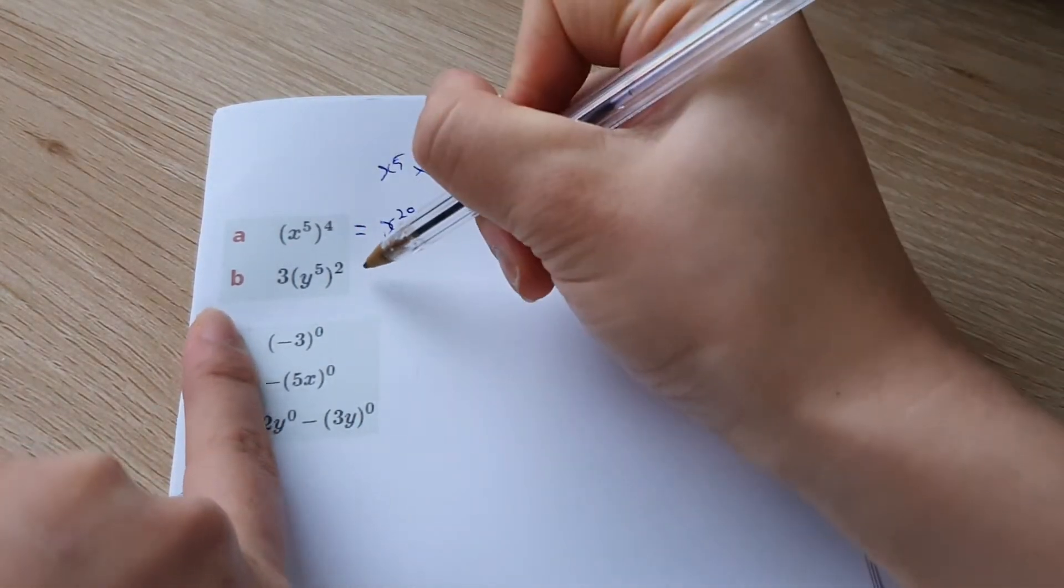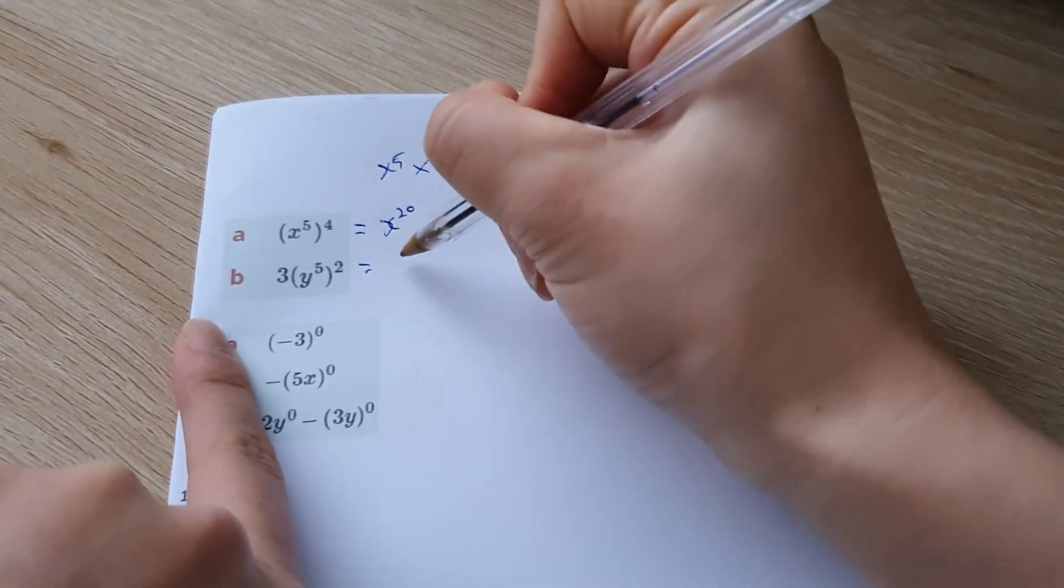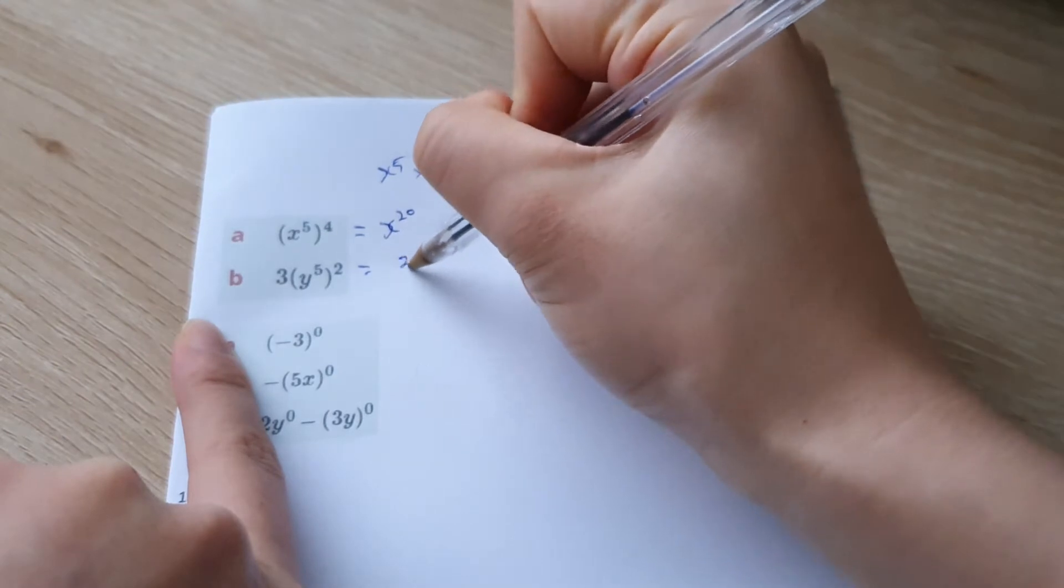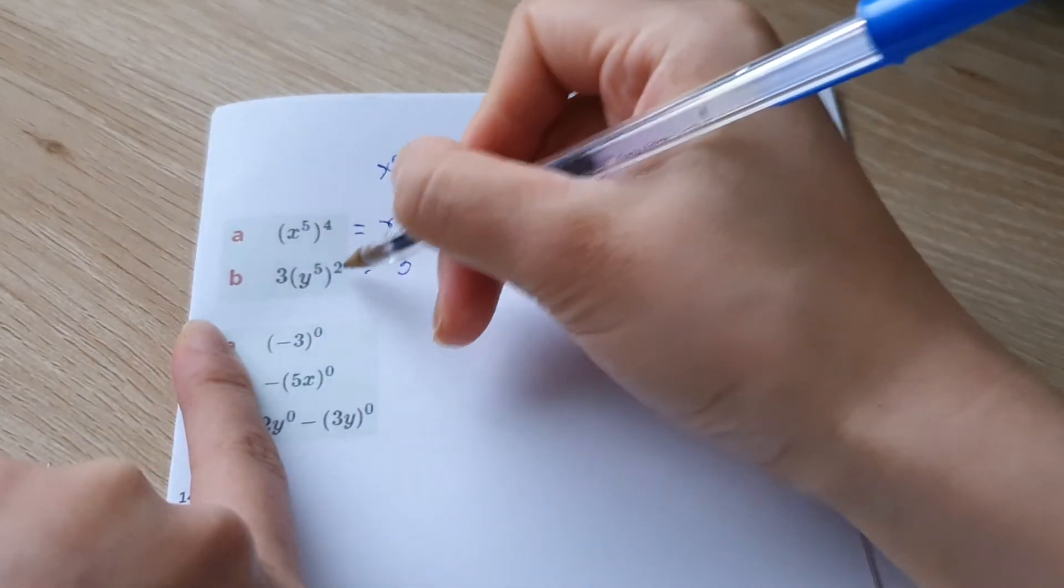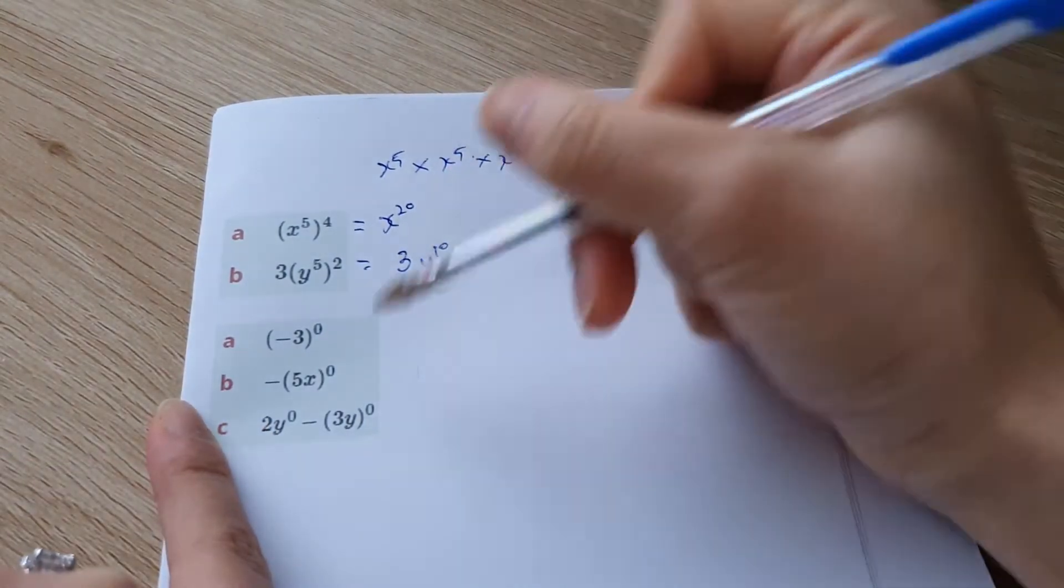All right, over to the next one. We've got three. Nothing's happening to three. So we'll just write three down. And that's y to the power of five raised to the power of two. So five times two is going to be y to the power of 10.